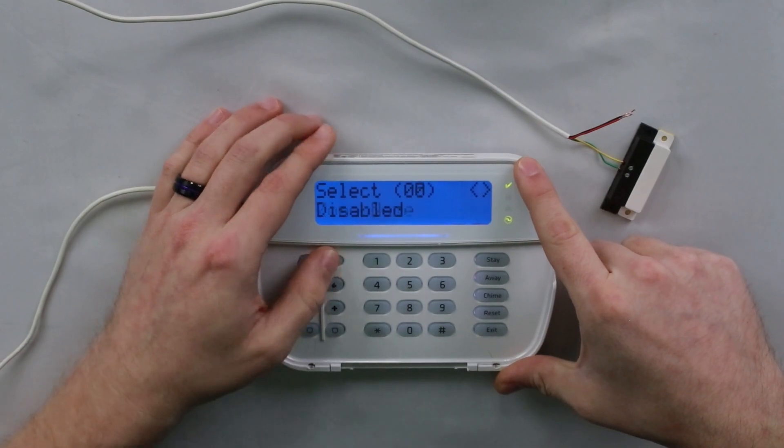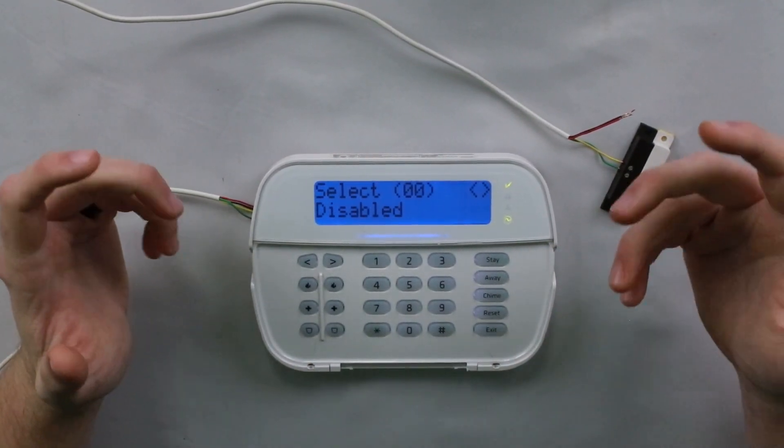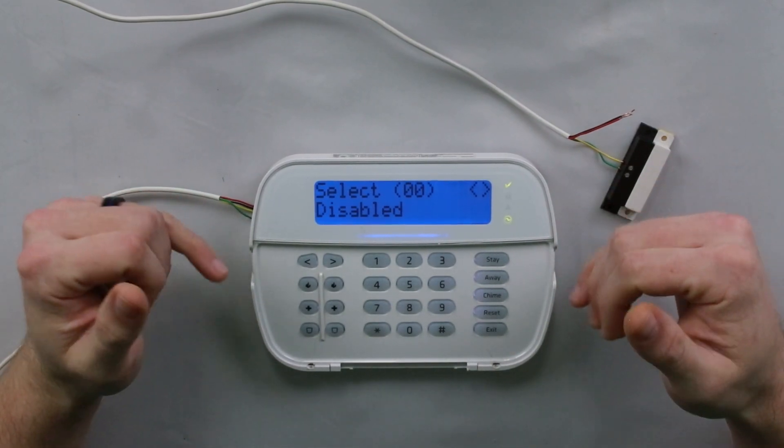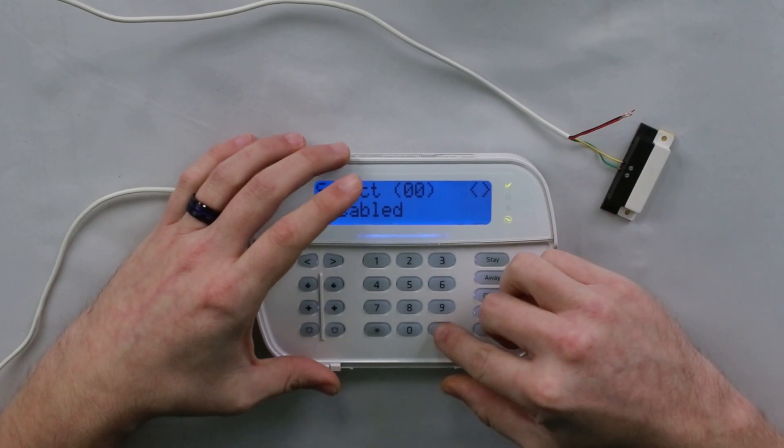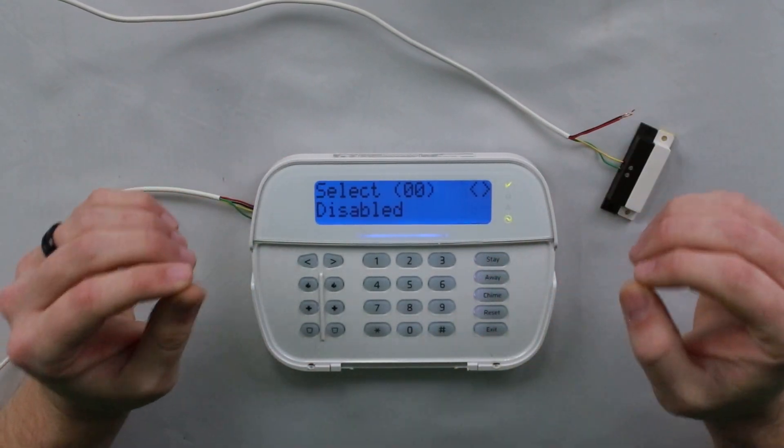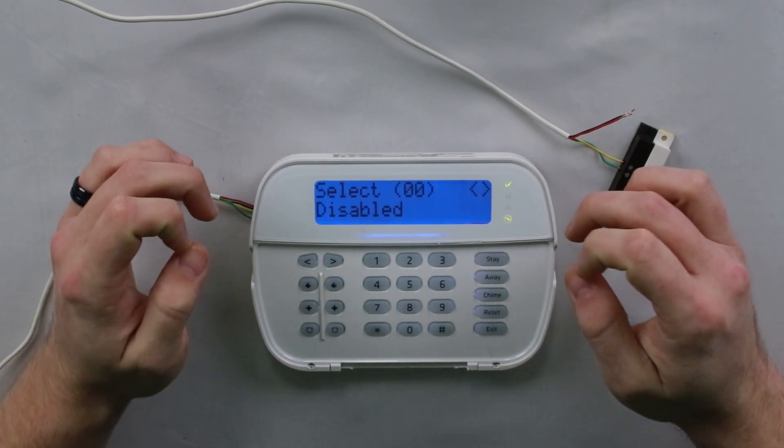The sixth option is to disable the chime. If there are certain doors that you don't want to chime, you can come in here and actually turn the chime off for that zone. So that's pretty much it.